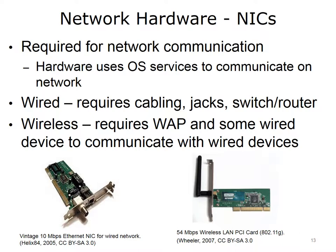The image on the bottom left of the slide is a vintage 10 Mbit per second Ethernet NIC for wired network communication. This old-style NIC has two connector types on it. The connector type on the left side of the image is an old BNC connector type. The connector type on the right side of the image is what a user would use to plug in an RJ45 jack Ethernet cable. The image on the right side of the slide is a 54 Mbit per second wireless PCI, peripheral component interconnect card, which relates to the IEEE 802.11G standard.